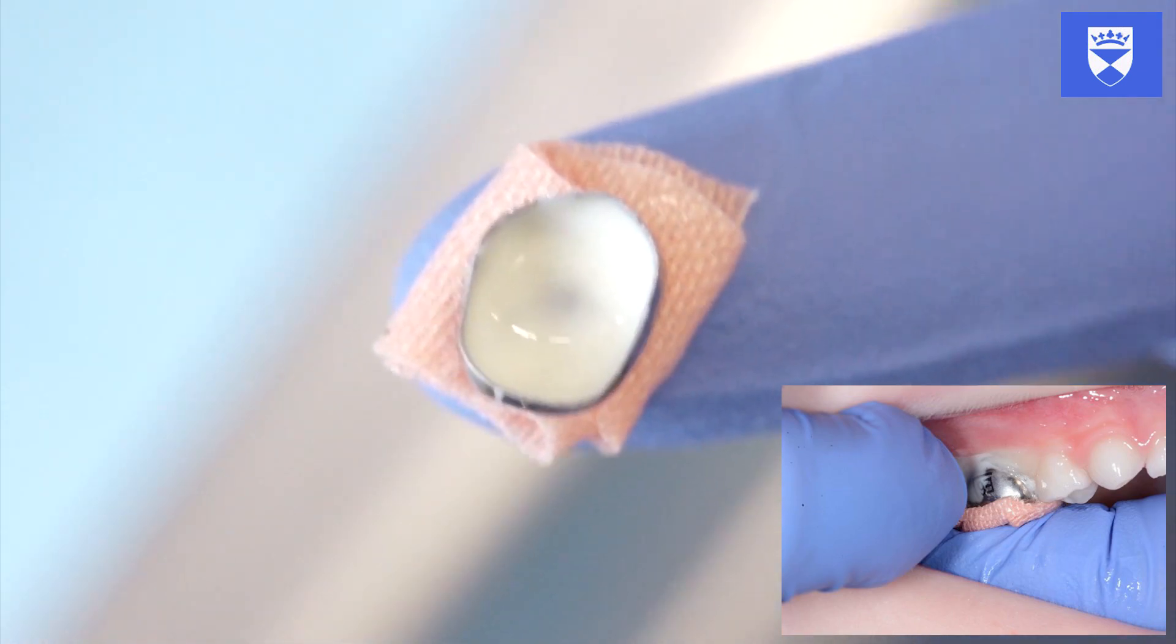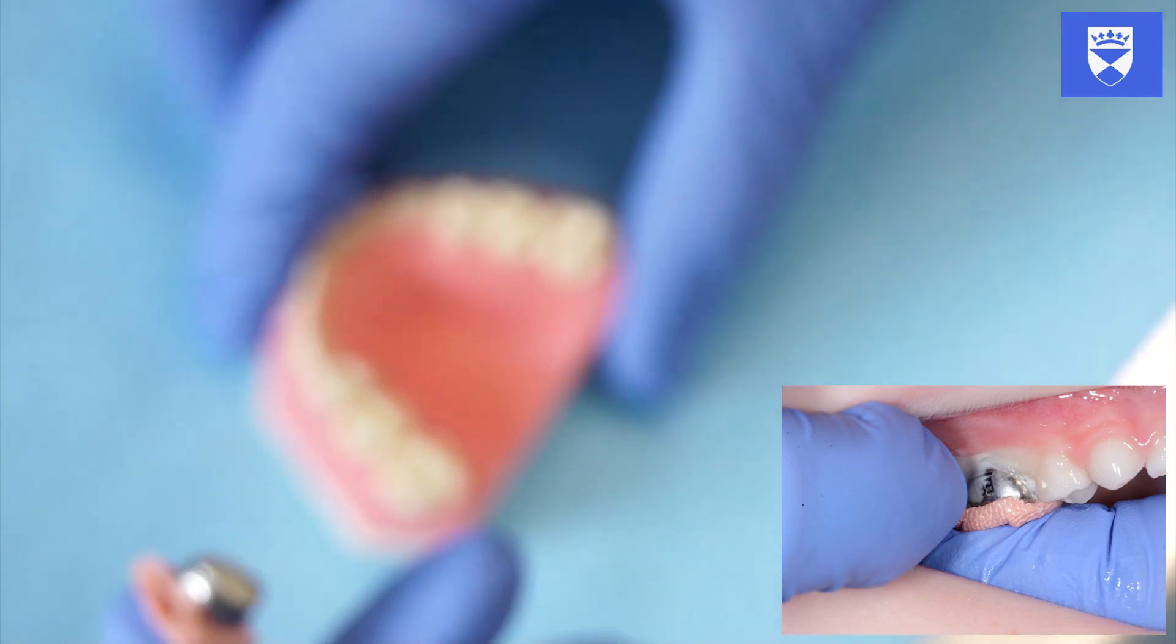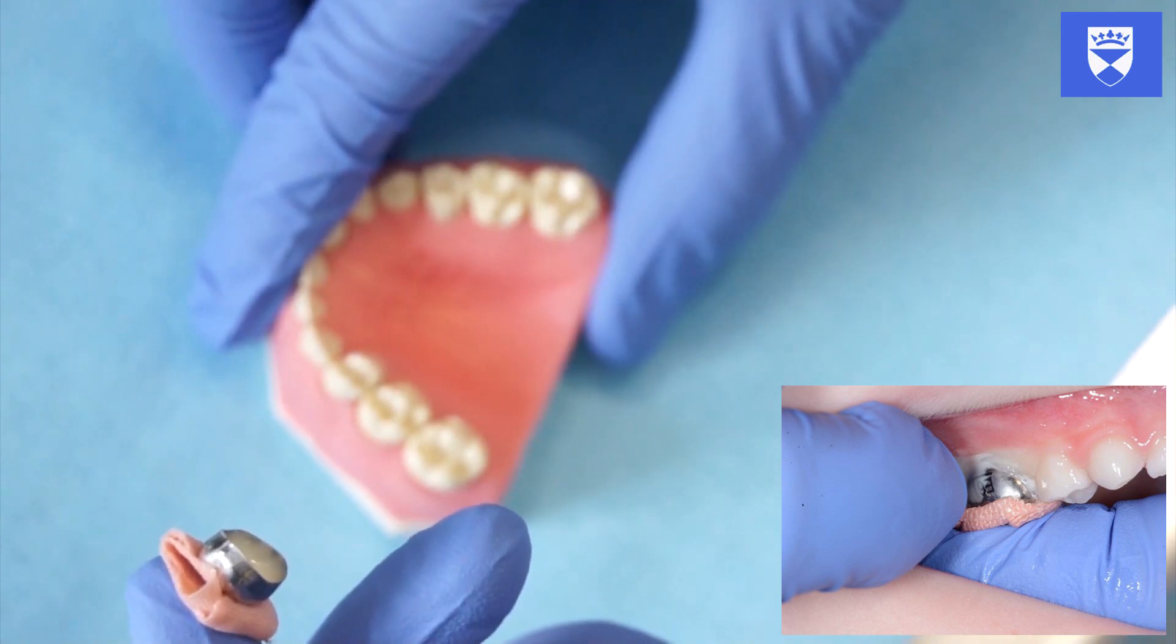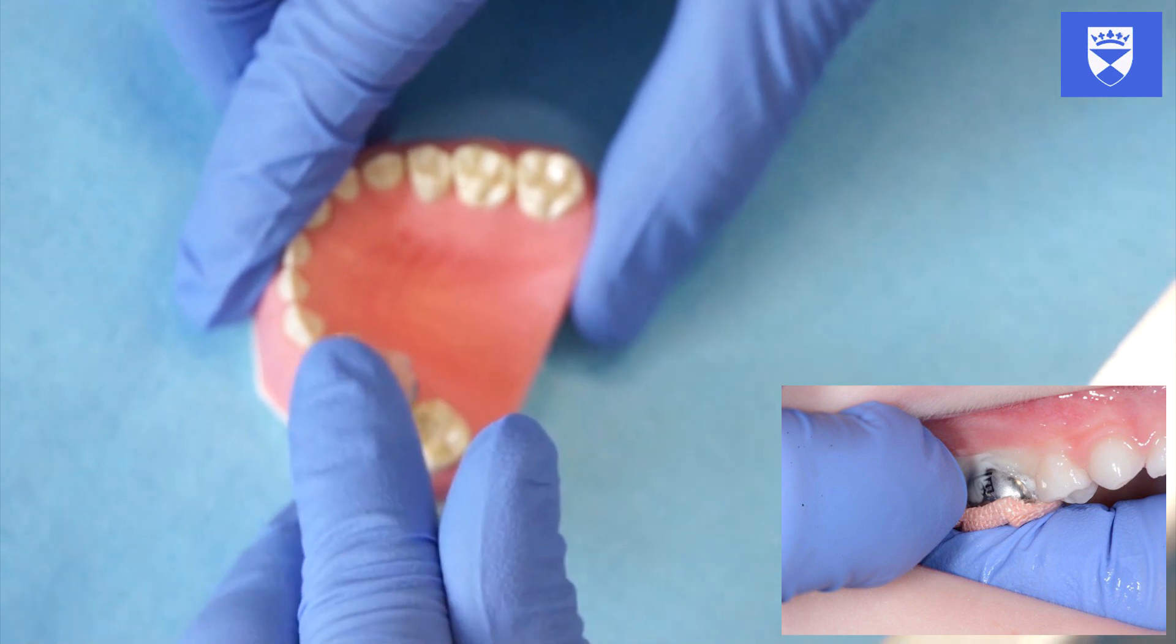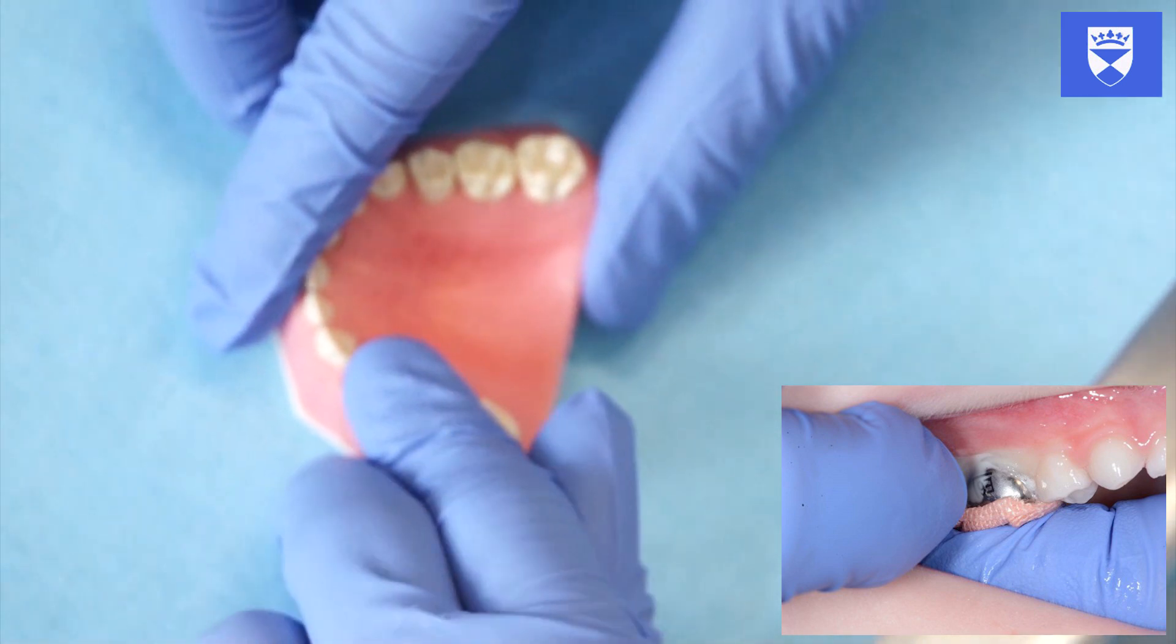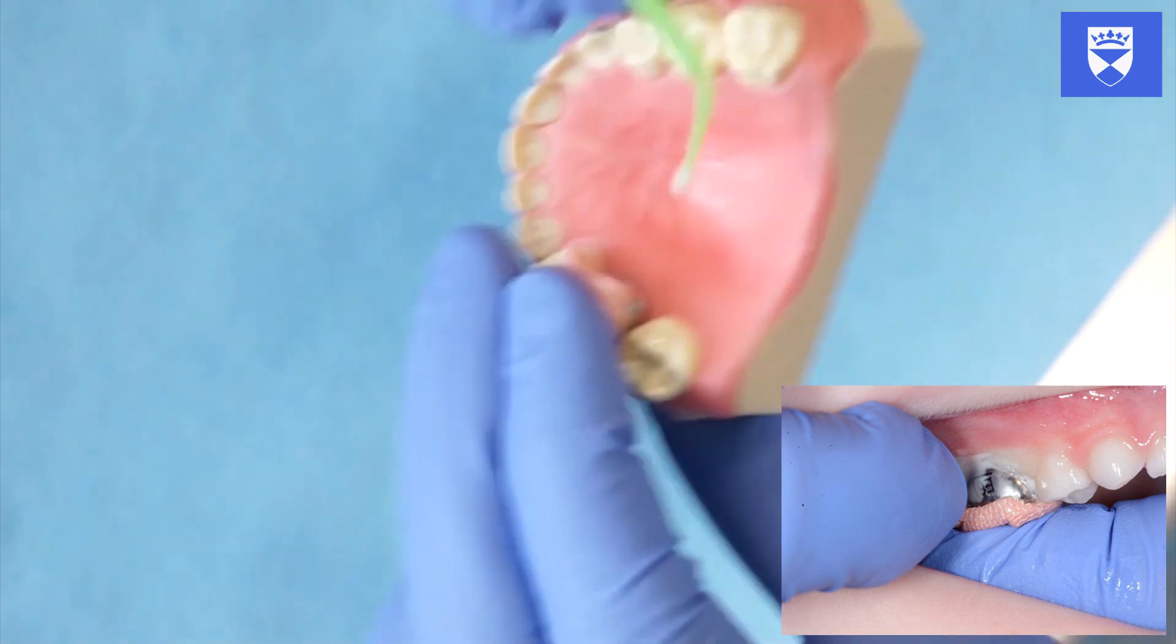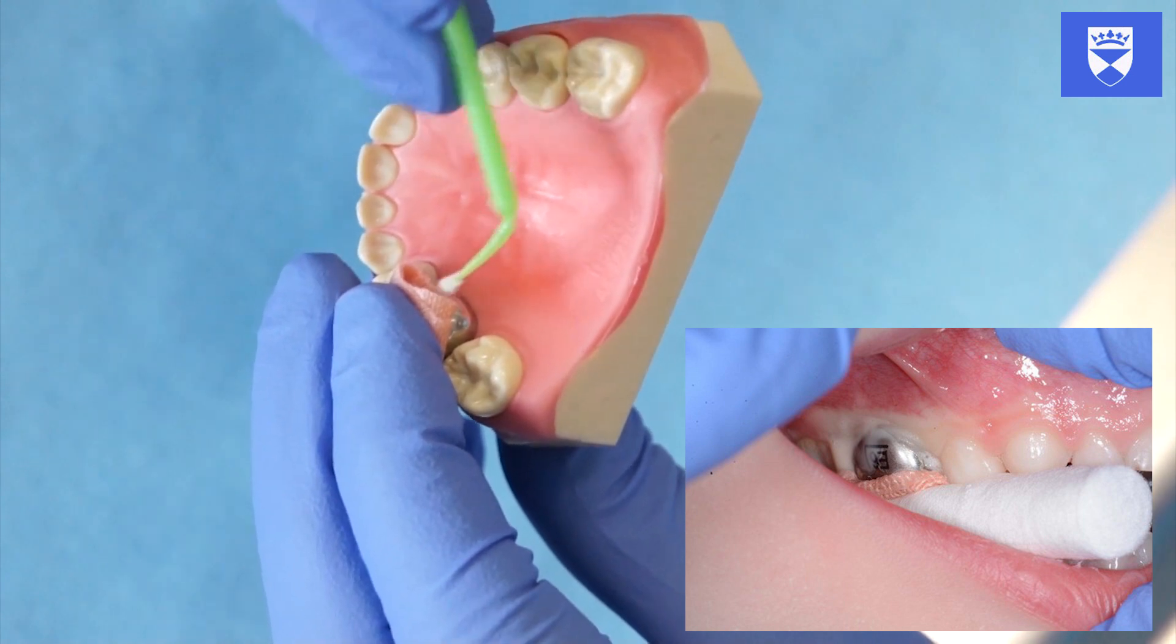Place the crown onto the tooth applying firm pressure. Quickly remove any excess cement. There are two ways to ensure that the crown becomes fully seated. Continue to apply firm pressure with your finger, or alternatively instruct your patient to bite down firmly on a cotton wool roll placed over the top of the crown.